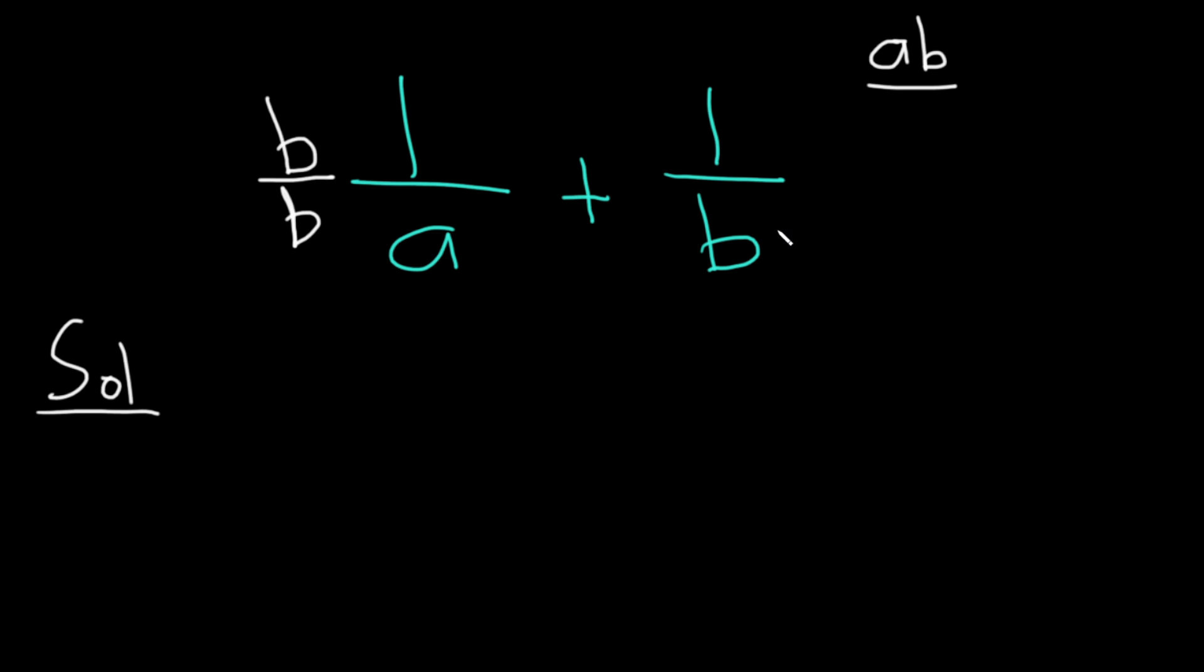Same thing here, except here we already have a b. We're just missing the a. So we multiply by a over a.